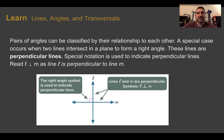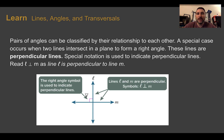Lines, angles, and transversals. Pairs of angles can be classified by their relationship to each other. A special case occurs when two lines intersect in a plane to form a right angle — these lines are perpendicular lines. Special notation is used to indicate perpendicular lines. We would read 'L ⊥ M' as 'line L is perpendicular to line M.' If we look at the picture here, we can see a couple of ways that perpendicular lines are expressed.